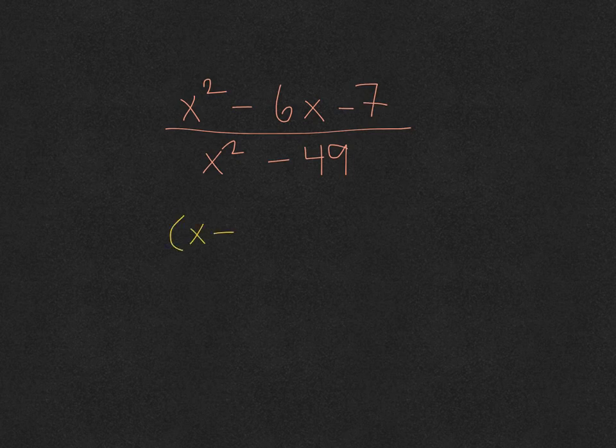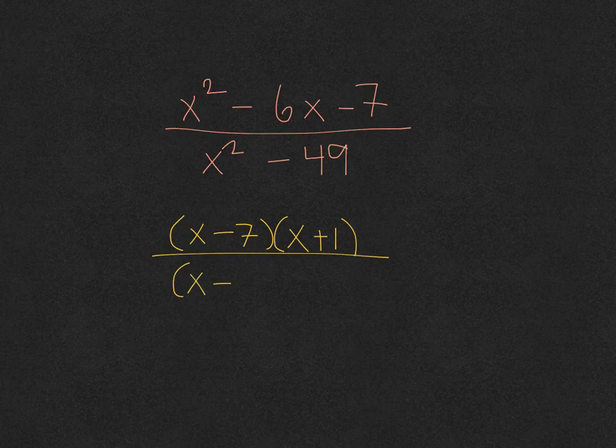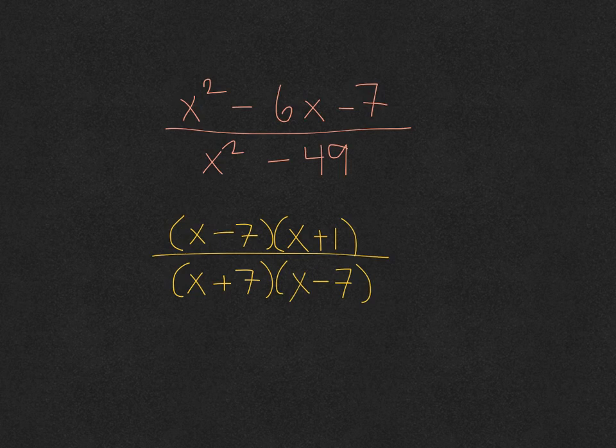The first thing you would want to do then, since you can only cancel whole factors, is factor the expression. So here we would get x minus 7 times x plus 1, and in the denominator, we would get x plus 7, x minus 7. Now, because we have factors now, you can look at whole factors that can cancel out. So because the x minus 7 is on the top and on the bottom, you can cancel those factors out.